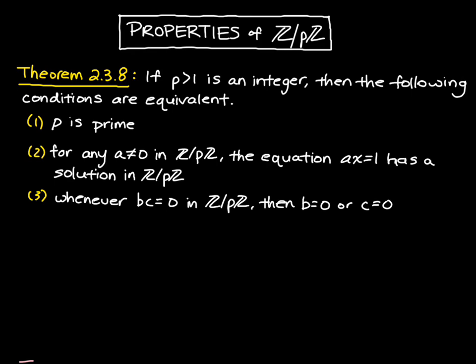So let's prove this. We'll start by showing that the first condition implies the second. This means we're going to start off by letting p be prime, and we want to first show that the equation ax equals 1 has a solution in Z mod pZ. So this is for any non-zero a. Pick a not equal to 0 in Z mod pZ.